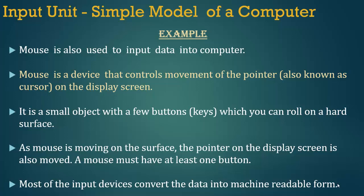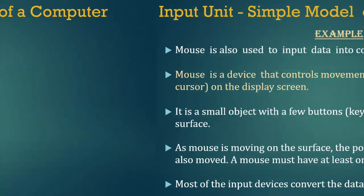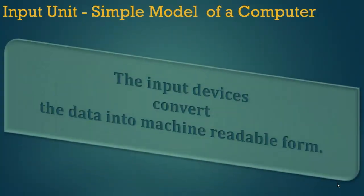Mouse ka upyog computer mein data input karne ke liye bhi kiya jata hai. Mouse ek upkaaran hai jo display screen par pointer — jise cursor ke roop mein bhi jaana jata hai — ki gati ko niyantrit karta hai. Yeh kuch buttons ke saath ek chhoti si vastu hai jise aap ek kathin satah par roll kar sakte hain. Jaise-jaise mouse satah par badh raha hai, display screen par pointer ko bhi sthaanaantarit kiya jata hai. Input devices data ko machine-readable roop mein parivartit karti hain.